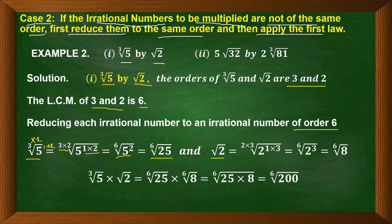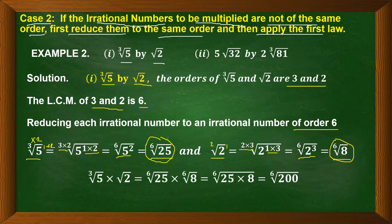Now for square root of 2, we have 2 outside which we multiply by 3, and the power inside is 1, so we multiply by 3 there also. We get 6th root of 2 cube, which is equal to 6th root of 8. Now both irrational numbers have the same order — 6th root. We apply the first law: cube root of 5 into square root of 2 equals 6th root of 25 into 6th root of 8. Applying the first law, product of 25 into 8 gives us 6th root of 200. This is the answer.